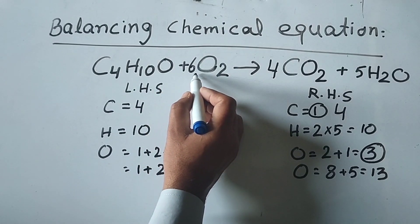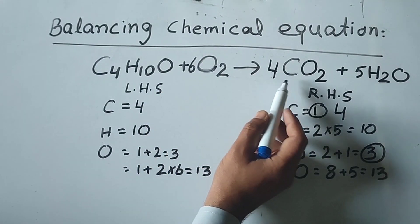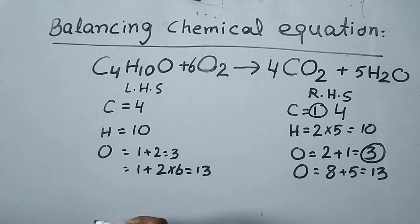C4H10O plus 6O2 yields 4CO2 plus 5H2O. This is the balanced chemical equation.